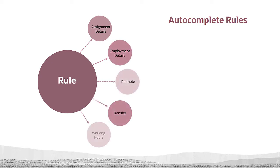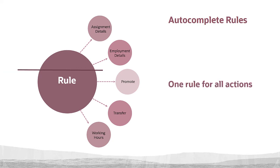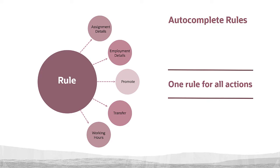The section in any responsive UI typically operates one object at a time, although there are exceptions. Sections can be named differently according to the action, but they call the same business object. For example, Assignment Details, Employment Details, Promote, Transfer, and Working Hours all call the same business object. Therefore, if a rule is written on an object supporting these sections, the rule will trigger in all the actions it is a part of.